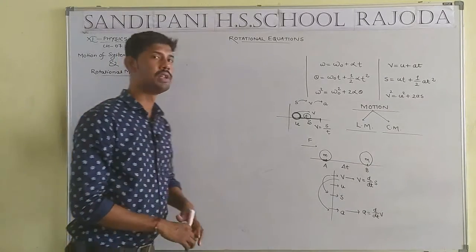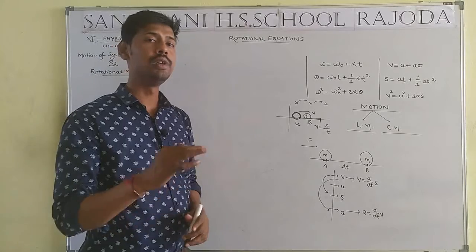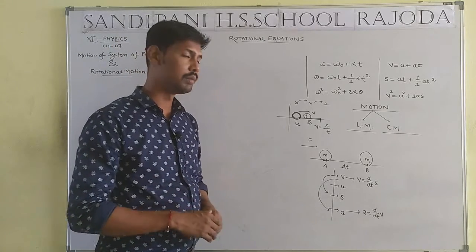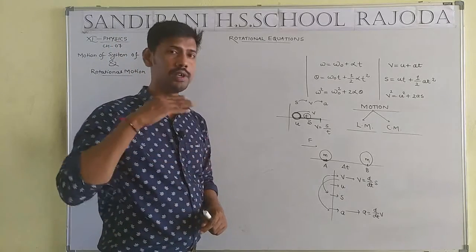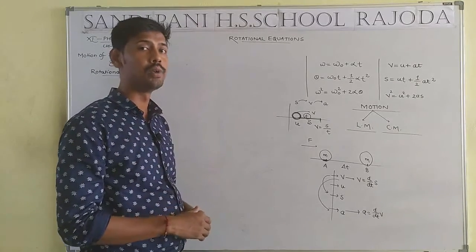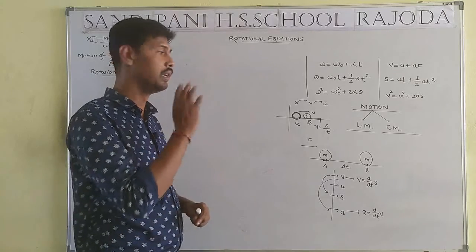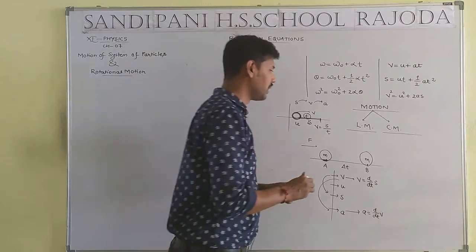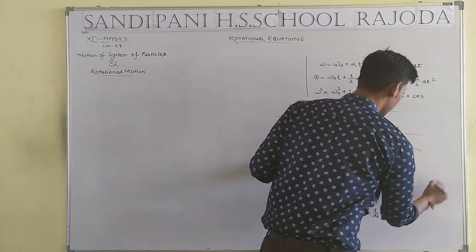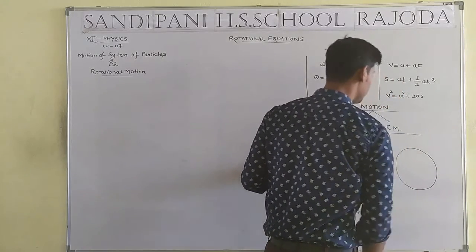This is all about linear motion — when our path is straight, it is one-dimensional (1D). Now we are taking the second type of motion, that means circular motion.